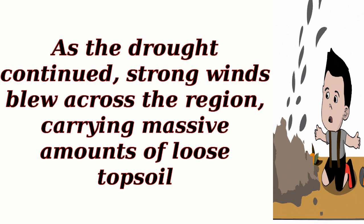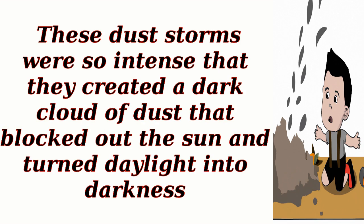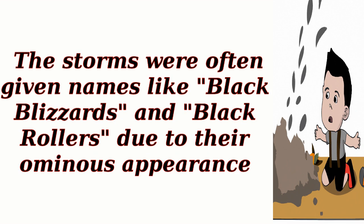As the drought continued, strong winds blew across the region, carrying massive amounts of loose topsoil. These dust storms were so intense that they created a dark cloud of dust that blocked out the sun and turned daylight into darkness. The storms were often given names like Black Blizzards and Black Rollers due to their ominous appearance.